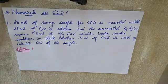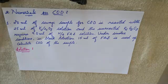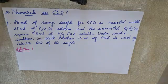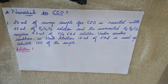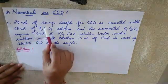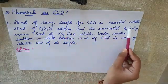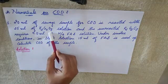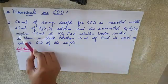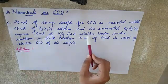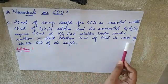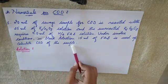Today we are going to study the numericals on COD. In the last class we studied about chemical oxygen demand, its procedure as well as the calculation part. Today we shall study about the numericals on COD. Here we have a problem: 20 ml of sewage sample for COD is reacted with 25 ml of potassium dichromate solution, and the unreacted potassium dichromate requires 9 ml of N/4 FAS solution. Under similar conditions in blank titration, 15 ml of FAS is used up. Calculate the COD of the sample.